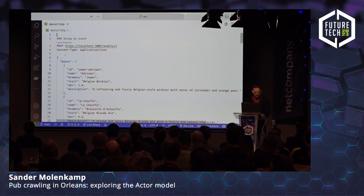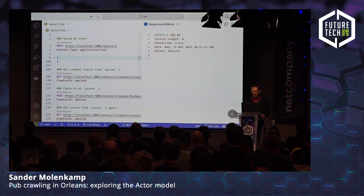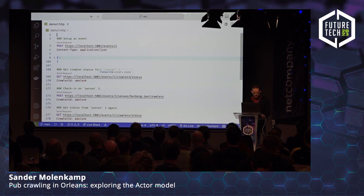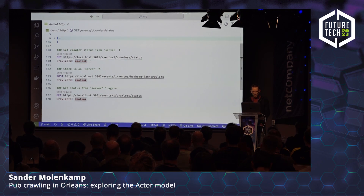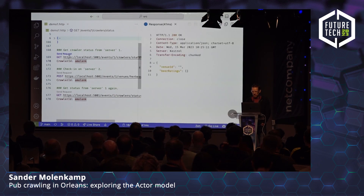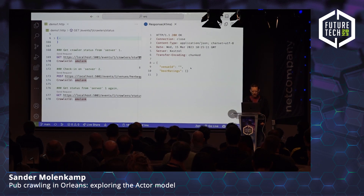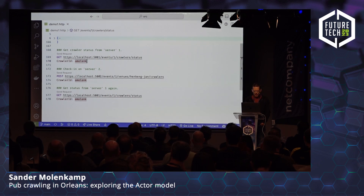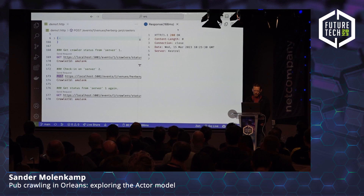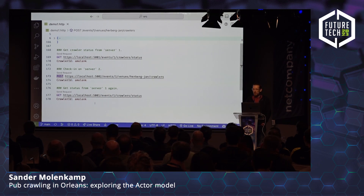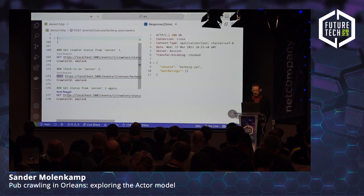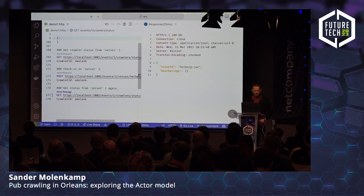These venues are in my hometown. Sending that request gives me back a 200 OK, so now I have some grains and events set up. My username for the event is Amolank. Getting my status from server number one on port 5001 — the current status is empty because I'm not checked in anywhere and haven't rated any beer. Let's fix that. I'll check in on server number two on port 5002 — that gives me back a 200 OK. Then going back to server number one to re-query the status — we are now checked in at venue id.herberg. And if I ask server number two, of course I get back the same thing.